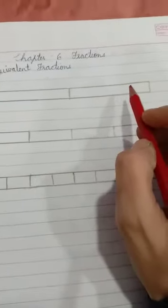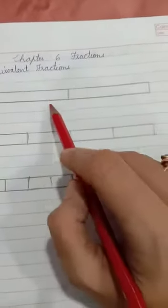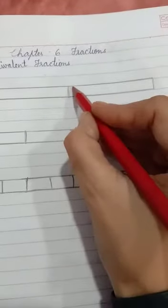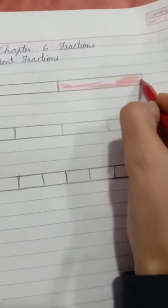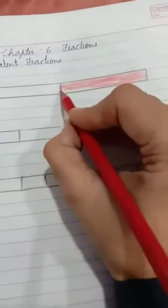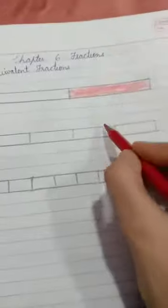Now, let's color up one half of it - one part out of two equal parts. In the second, two parts out of four equal parts: one, two.